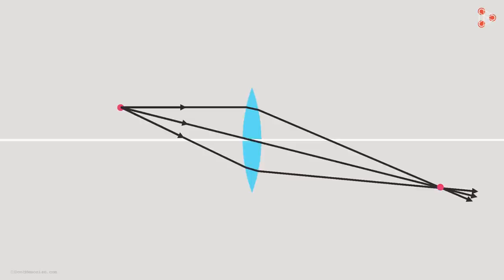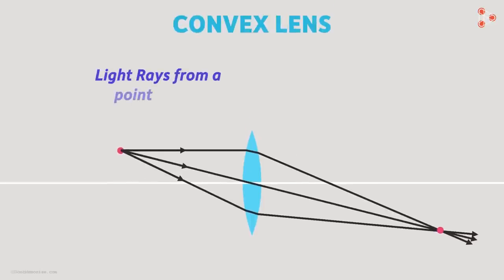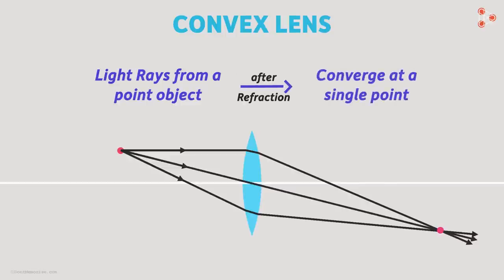And this is one of the patterns that we were talking about. Convex lens bends the light rays from a point object in such a way that after refraction all these rays converge at a single point. And this is the point where the image of the point object is formed. If we were to place a screen here at this location, then the image will be formed on that screen.